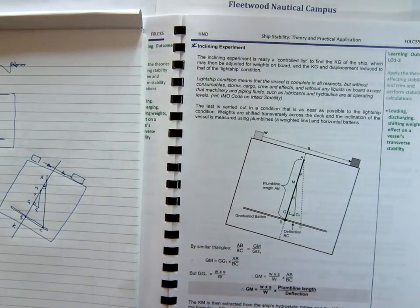We'll have a quick look now at what we call the inclining experiment. An inclining experiment is carried out to establish as near as we can the correct centre of gravity or kg of the vessel.